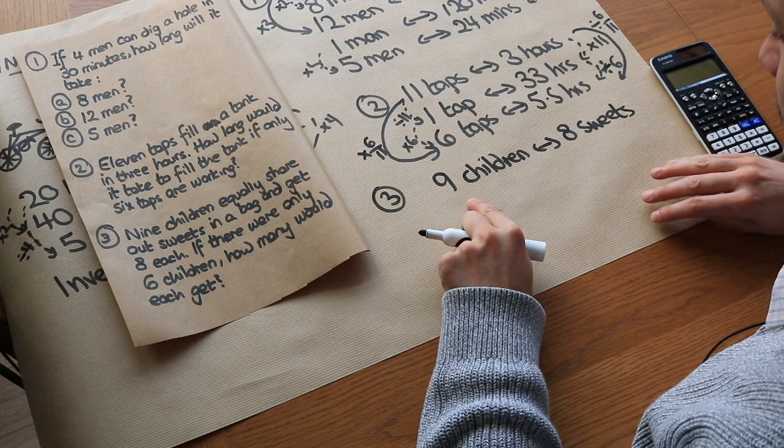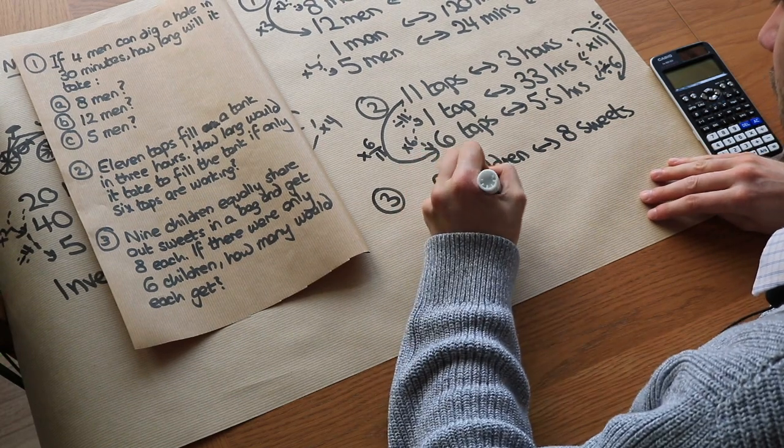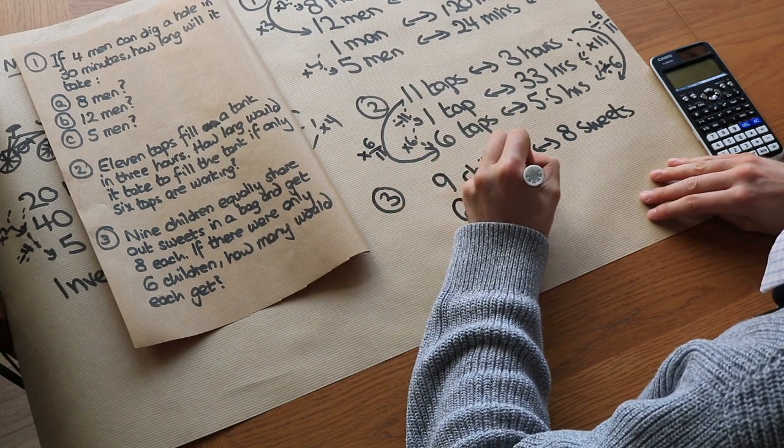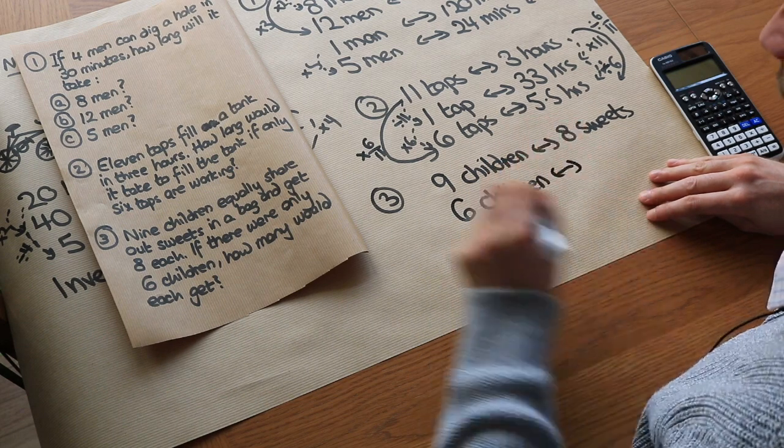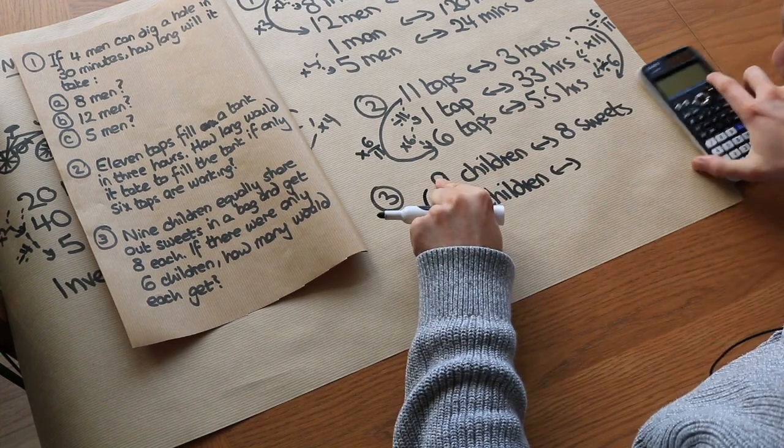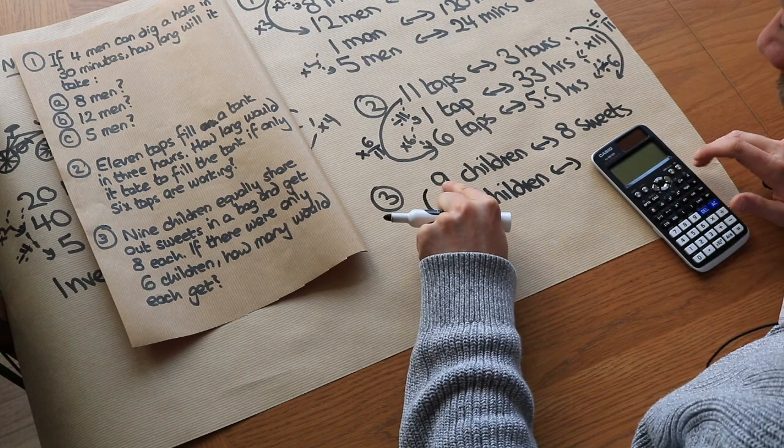So we want to find out for 6 children. So I'm just going to use the scaling method this time, just for variety. So we work out what the scale factor is. So we do the second number divided by the first. We do 6 divided by 9, which is 2 thirds.